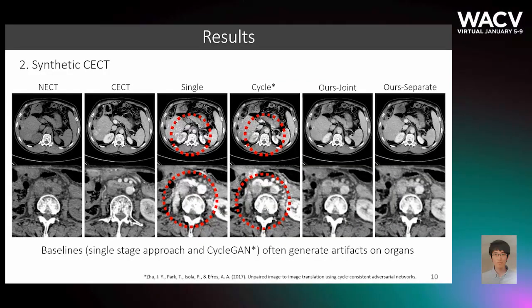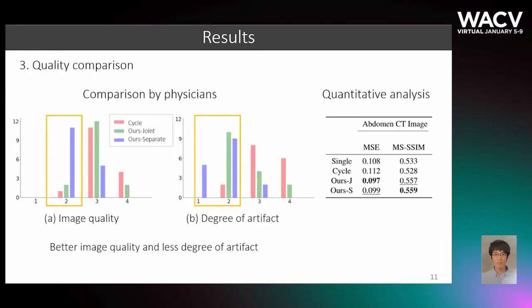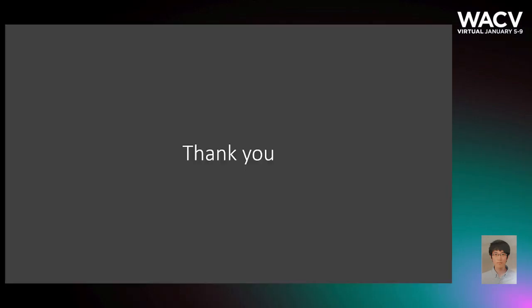These images are qualitative results of synthetic CECT. There are two baselines for comparison: a single-stage approach that trains a generator with an adversarial loss to directly synthesize CECT from NECT, and CycleGAN, a method for unpaired image-to-image translation. Compared to these two baselines, our joint and our separate methods rarely generate artifacts on organs. These graphs summarize qualitative comparisons by physicians, who assign grades from 1 (excellent) to 5 (poor) for the quality of synthesized CECT images across 16 cases. Our separate is better than our joint, as well as CycleGAN, in terms of both quality criteria. Thank you for watching this video.